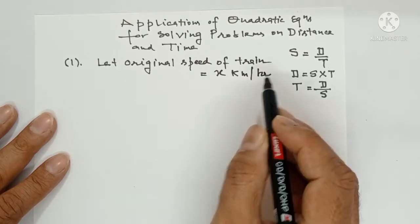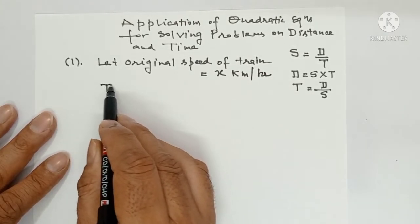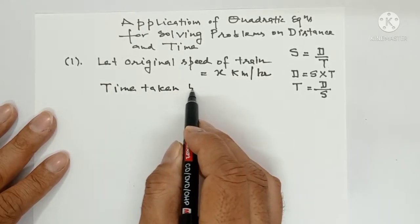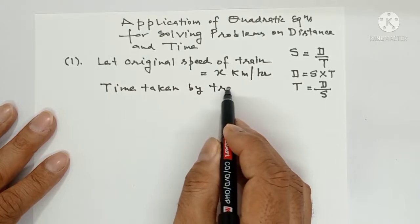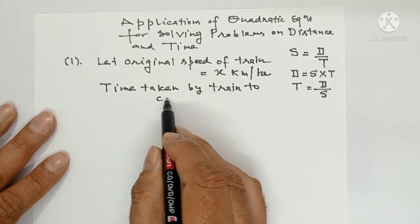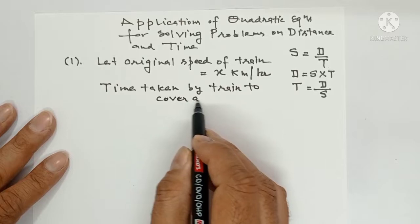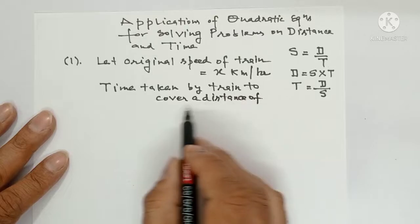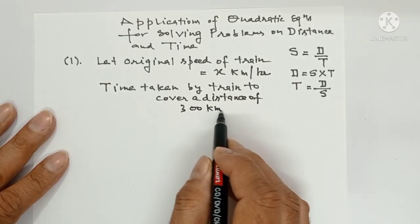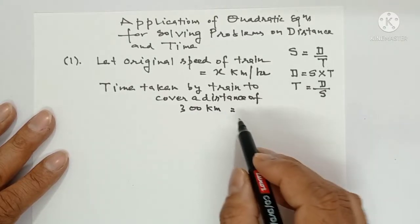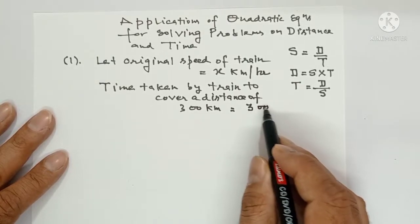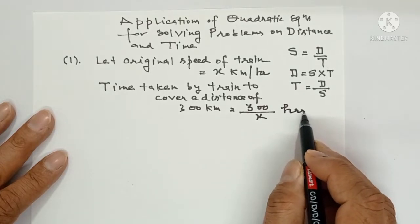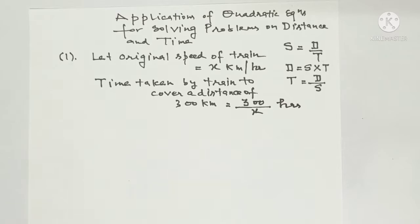Now, how much time will be taken by the train to cover a distance of 300 km? So time taken by train to cover a distance of 300 km - formula of time is distance upon speed. So distance is 300 upon speed is x, and this time will be in hours. So 300 upon x hours.